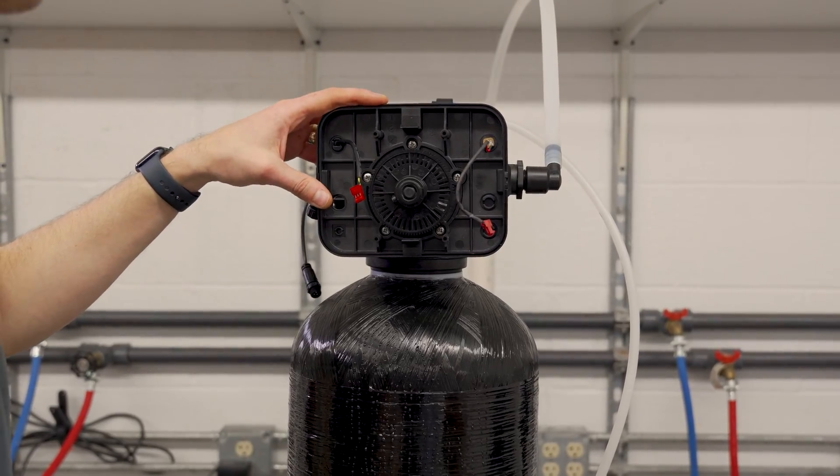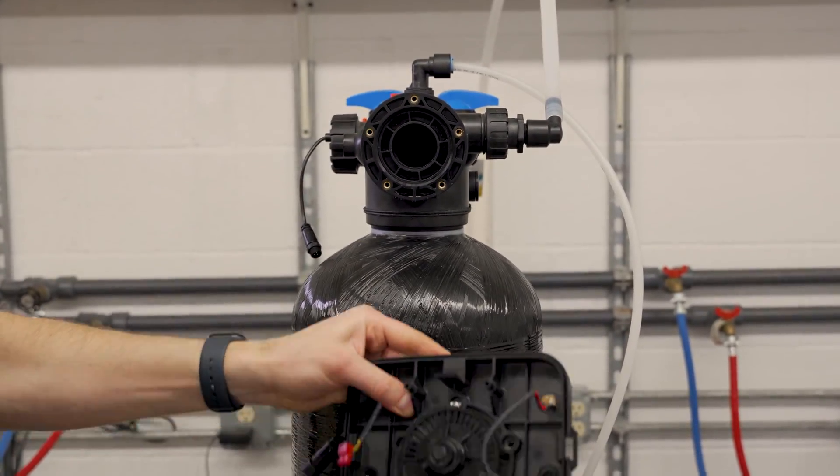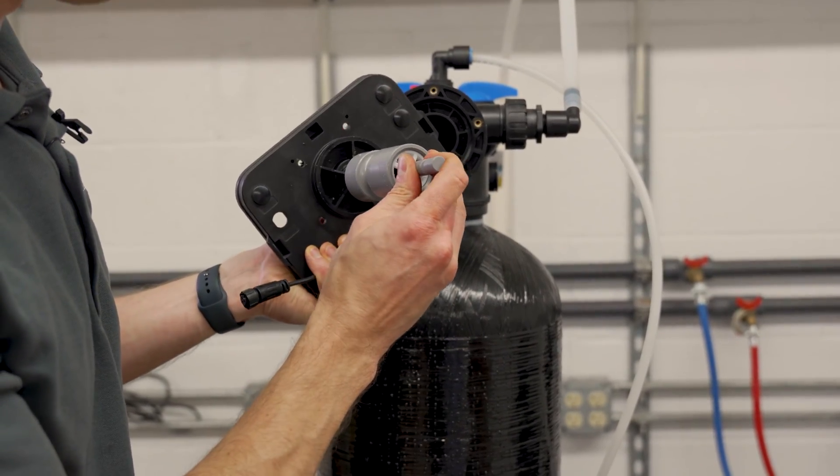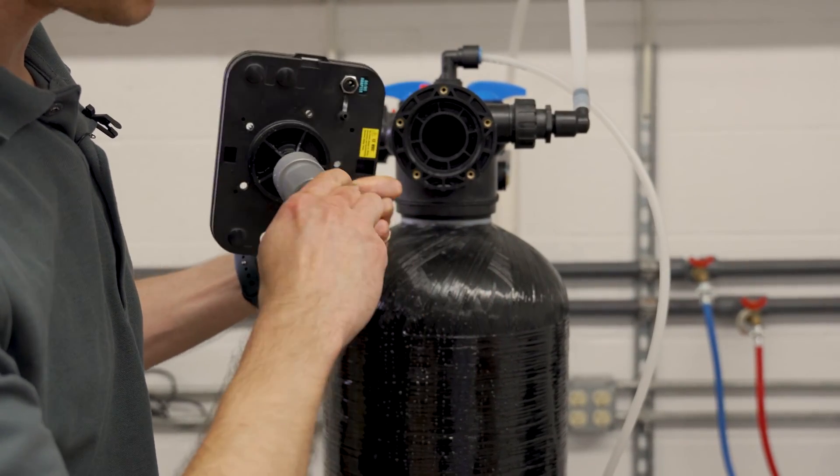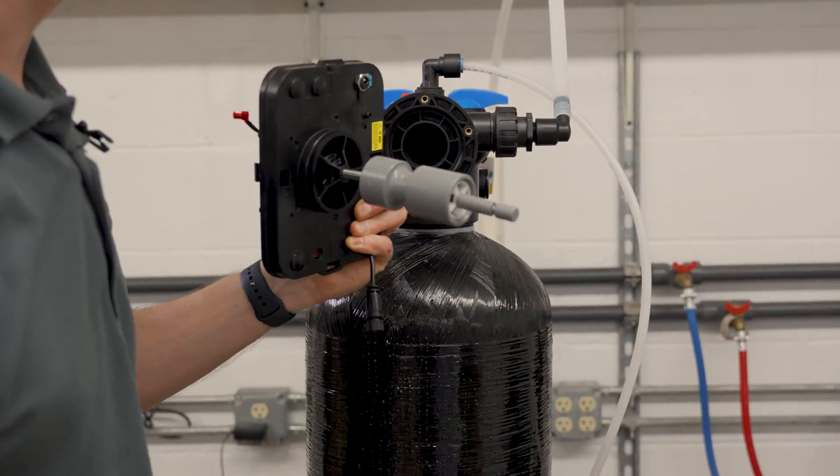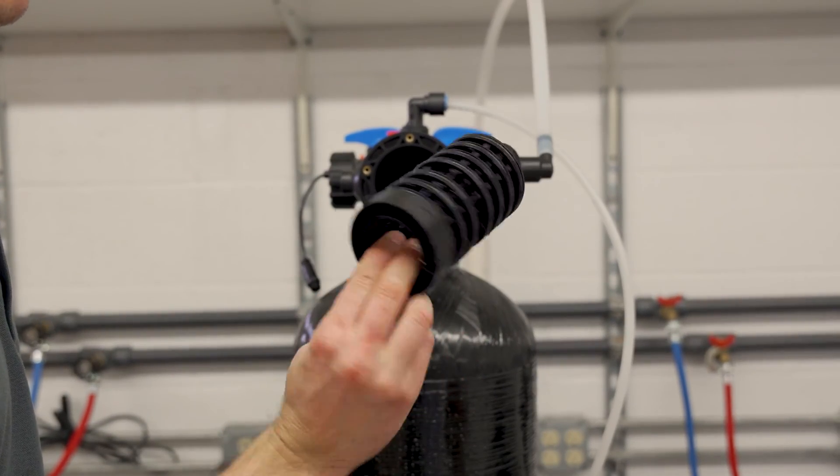We can now remove the back plate and the piston is going to come out with it. This is the main piston and if it's a softener, you'll have this brine piston as well, which just snaps onto the bottom like that. The seal stack just comes out all in one piece.